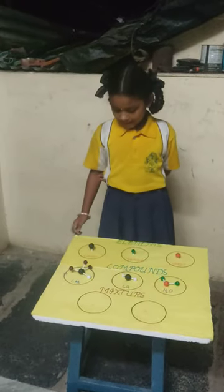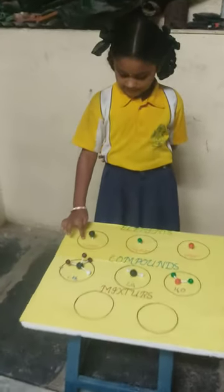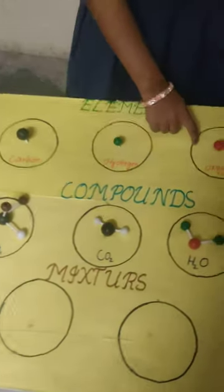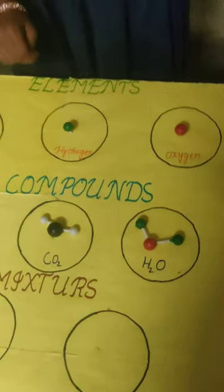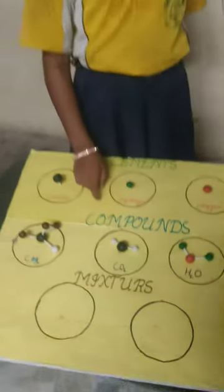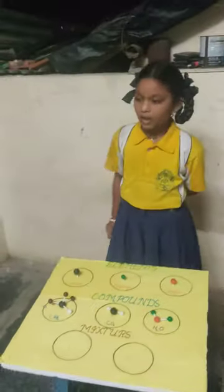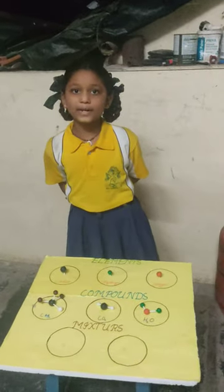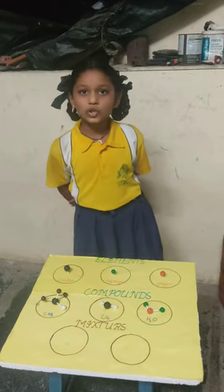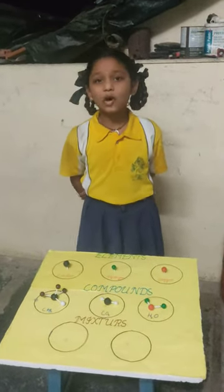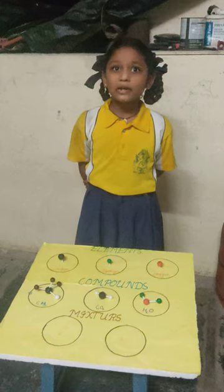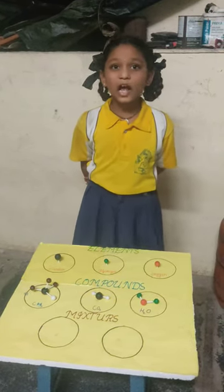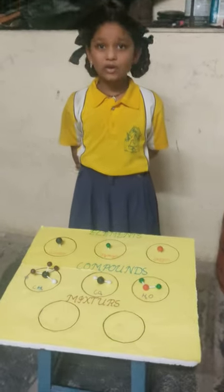Elements — examples: Carbon, Hydrogen, Oxygen. Compounds — a combination of two or more elements is called a Compound.